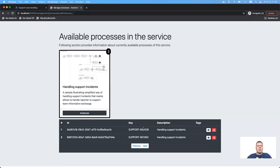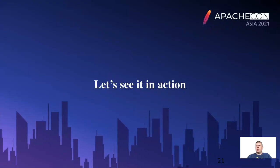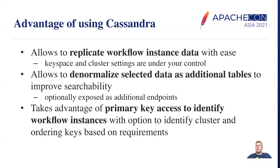This shows us that we can easily take advantage of the interaction between workflows, the APIs exposed by them, and backed by an extremely efficient and highly distributed Apache Cassandra storage. The advantage of using Apache Cassandra is to allow us to replicate the workflow instance to any level — with keyspace and cluster settings still under our control. By making sure we can grab the workflow data stored in compact format, we can then denormalize it and, based only on our requirements, store it in additional tables to improve searchability and open up application-specific ways of accessing data.